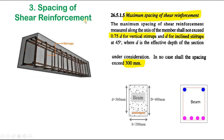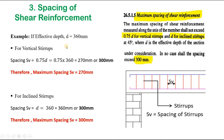Next is the calculation of spacing of shear reinforcement using the maximum spacing condition, given in IS 456 clause 26.5.1.5. The maximum spacing of shear reinforcement measured along the axis of the member shall not exceed 0.75d for vertical stirrups and d for inclined stirrups at a 45° angle, where d is the effective depth. In no case shall the spacing exceed 300 mm.